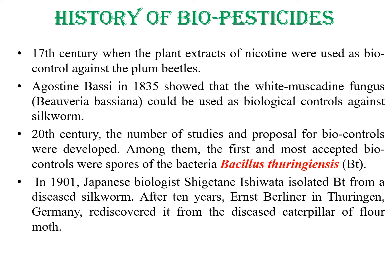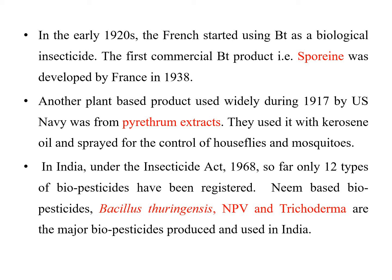In the 20th century, a number of studies and proposals were developed for biocontrol agents, among which the most accepted biocontrol was the spore of the bacteria Bacillus thuringiensis. The first time, Japanese biologist Ishiwata isolated Bacillus thuringiensis from a diseased silkworm. After 10 years, Ernst Berliner in Thuringia, Germany rediscovered it from the diseased caterpillar of the flour moth. In the early 1920s, the French started using Bacillus thuringiensis as a biological insecticide, and the first commercially produced Bacillus thuringiensis, known as Sporene, was developed by France in 1938.